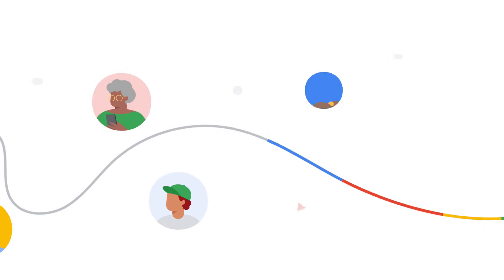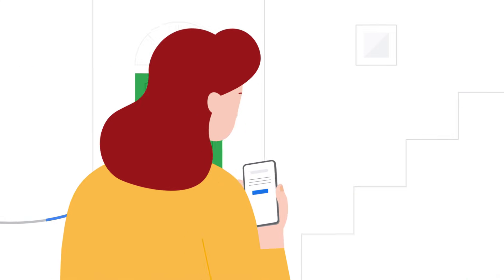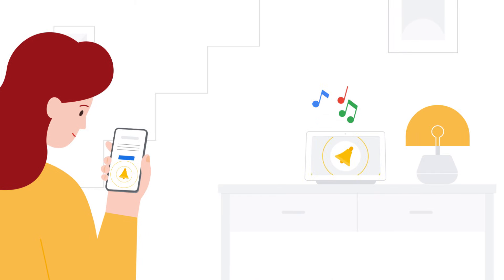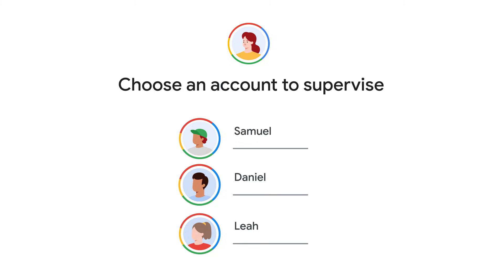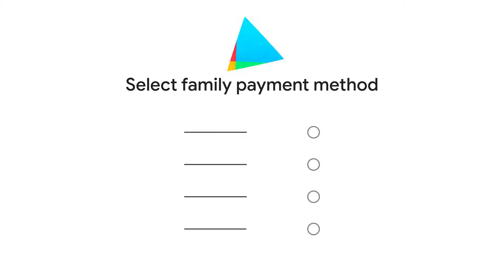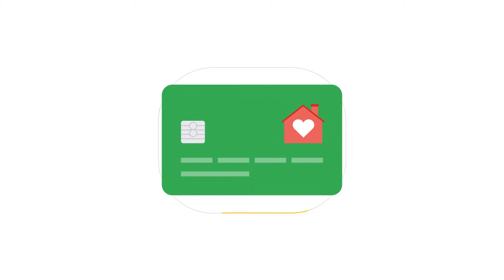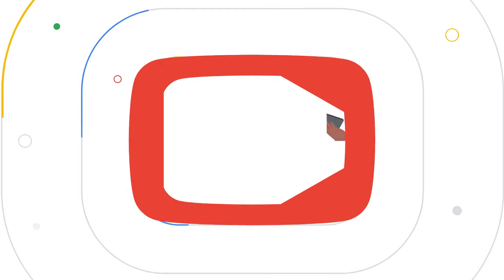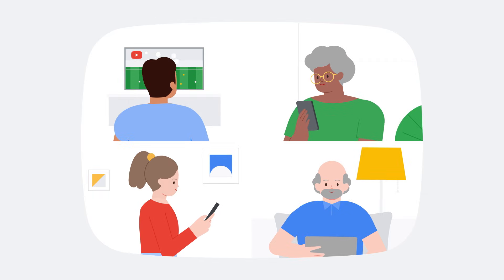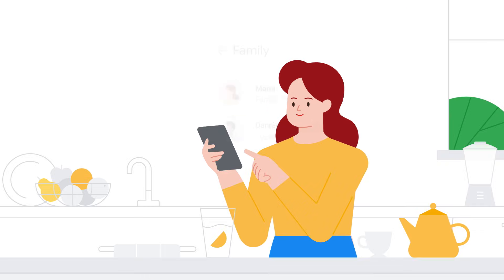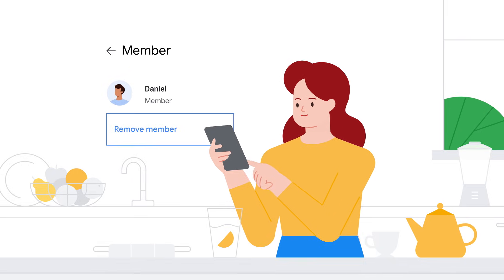With your family group, you can share your Google Cloud storage, set up family reminders and broadcasts, manage parental permissions for child accounts, share your YouTube TV membership, add or remove family members, delete the family group, and decide which Google services the family can use.